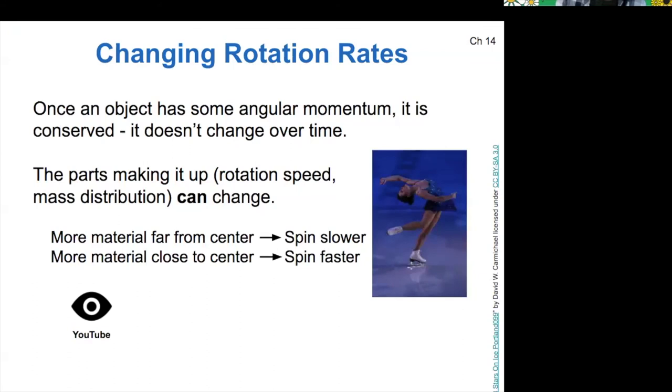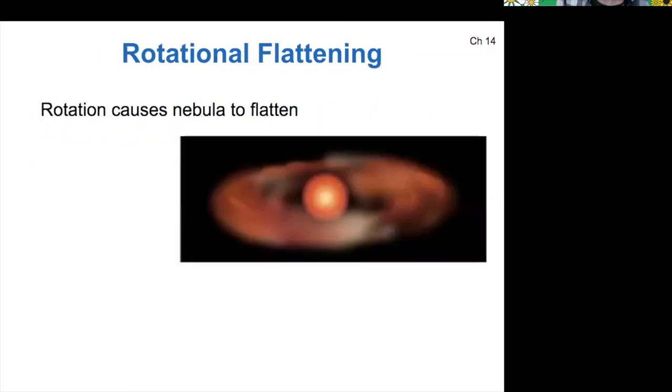So as this occurred, that means that the parts making it up, the mass distribution of the solar nebula got smaller so that the rotation speed got larger. And this leads us to the second physical principle that governs our solar system formation, and that is called rotational flattening. So the faster and faster that you spin an object, that causes the equator of the object to be pushed outwards.